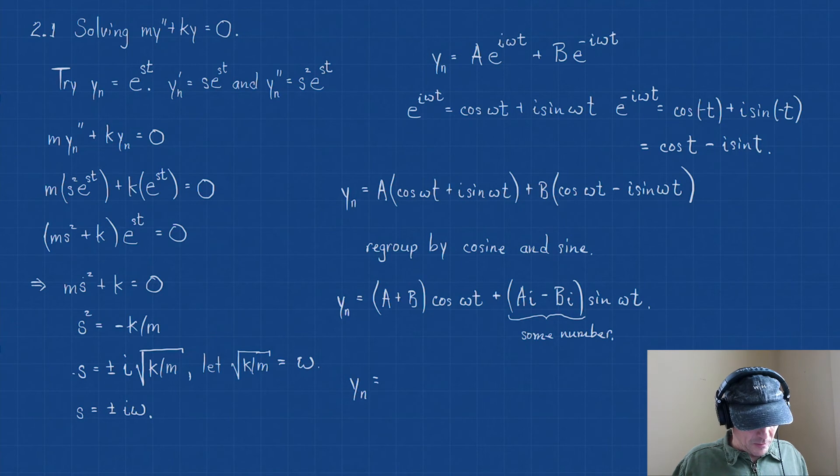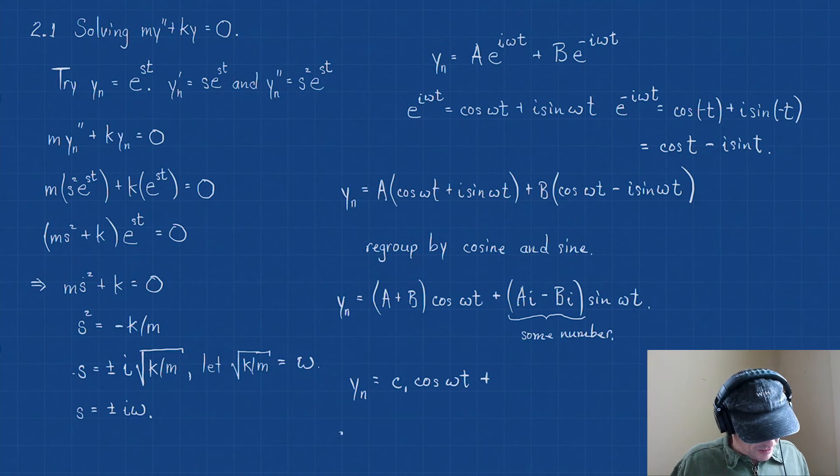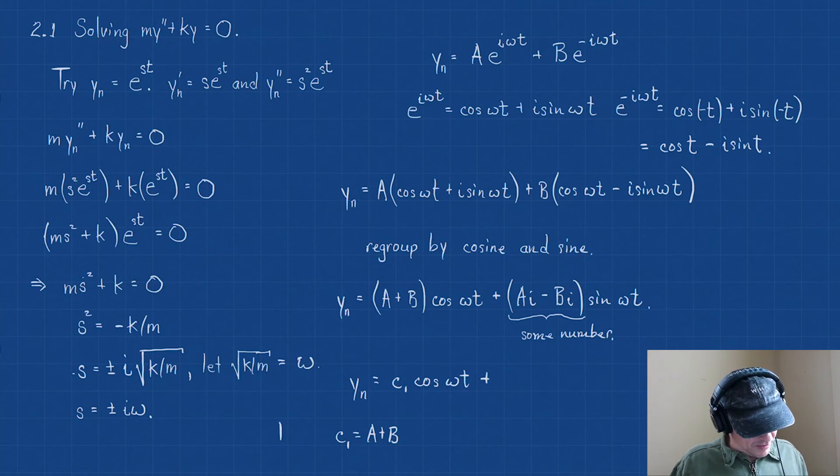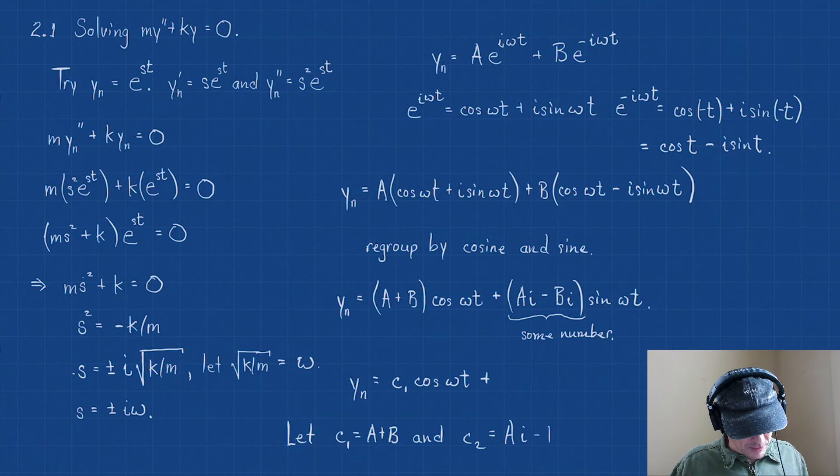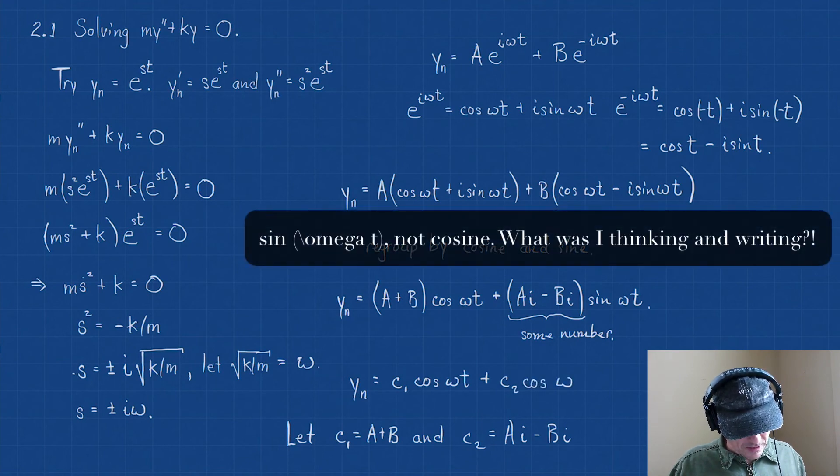So what we're going to do is our general solution equation to this second order differential equation is that our null solution, y_n, is equal to some c₁·cos(ωt) plus, well, that's just for a + b, we'll just simplify it. So we'll say c₁ = a + b. And we're going to do this, we'll let c₂ = a·i - b·i. So if we do that, we write this as c₁·cos(ωt) + c₂·sin(ωt).